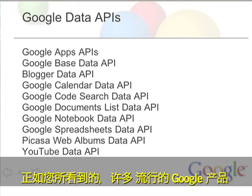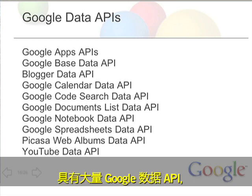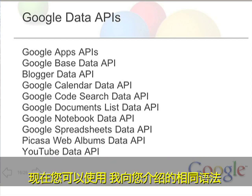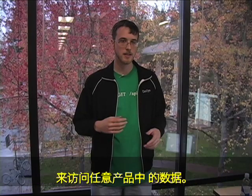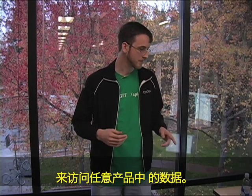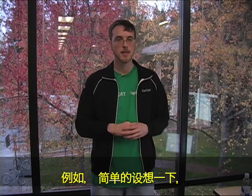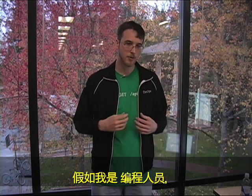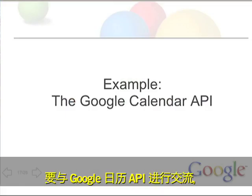As you can see, there are a number of Google Data APIs for popular Google products, such as Google Calendar, Google Spreadsheets, Picasa, and YouTube. You can now access data in any one of those products using these same semantics. For example, let's go through a simple way that I might, as a programmer, interact with the Google Calendar API.